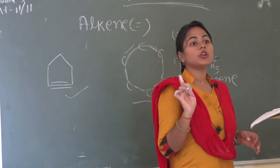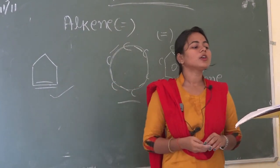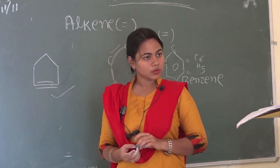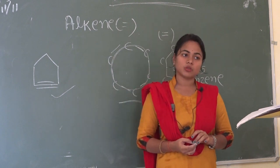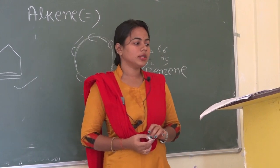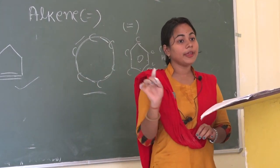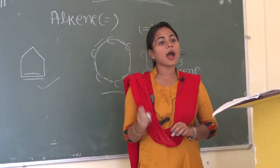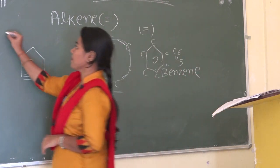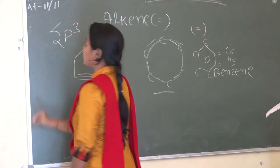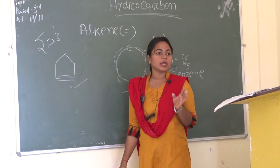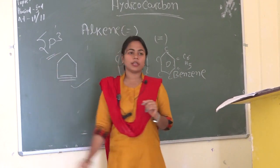All single bonds are also called saturated hydrocarbons, and all double or triple bonds are called unsaturated hydrocarbons. Alkane is a saturated hydrocarbon, and alkene and alkyne are unsaturated hydrocarbons. All carbon atoms in alkane are sp3 hybridized.